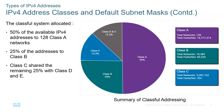Originally, we called this classful addressing — you need to know what class the IP address is to determine the network portion without a subnet mask. Later, in the late 1980s into the 90s, subnet mask addresses were introduced. To be backward compatible, each class was given a default subnet mask: Class A gets slash 8, Class B gets slash 16, and Class C gets slash 24.